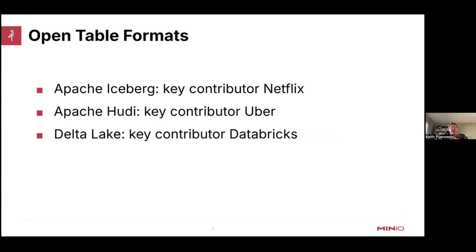Let's go a little bit deeper into OpenTable formats. OpenTable formats are not software you have to buy — they are specifications. There are three in the industry today: Apache Iceberg from Netflix, Apache Hudi from Uber, and Delta Lake developed by Databricks. These three companies didn't develop these specifications because they were bored. They had a big data problem that existing products could not solve, so they solved it for themselves and open sourced these specifications.